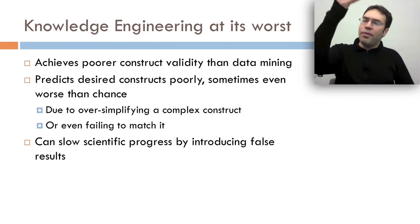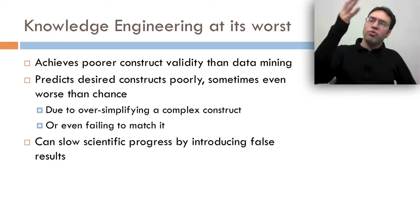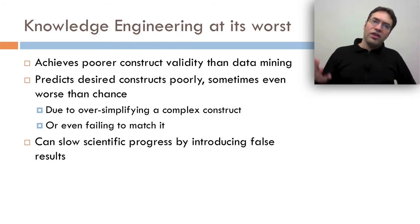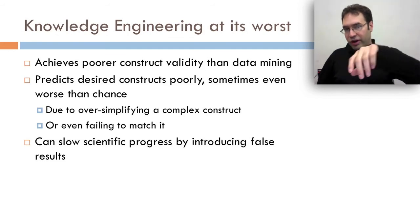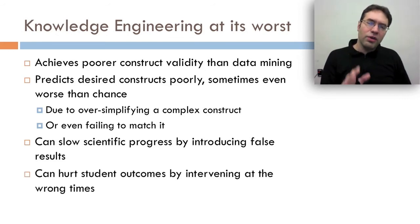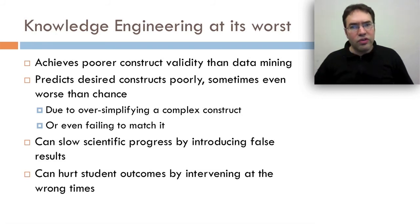And this can slow scientific progress by introducing false results. If you say that you've got a model of X, and your model of X is actually wrong, and you come up with results based on that, well, that's not what you should be doing in discovery of models. Doing discovery with a really good model, like Aleven's model, is a really smart thing. Doing it with a junk model? Not so great. And this can even hurt student outcomes. If you take your model and you build it into a learning system, and your model is wrong, overly simple or just plain wrong, it's going to intervene at the wrong time, and that's going to hurt student learning outcomes.